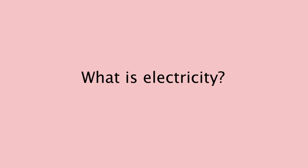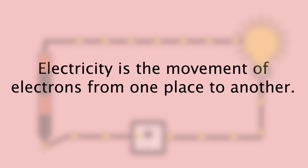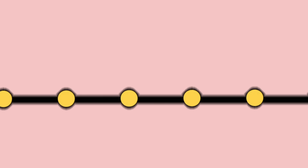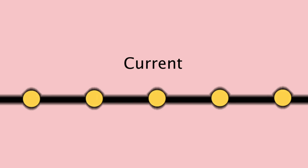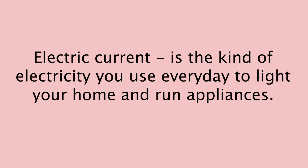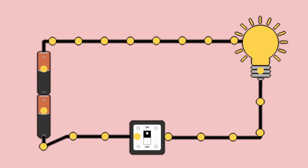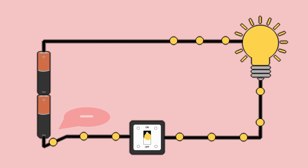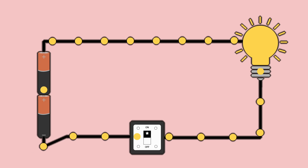So what is electricity? Electricity is the movement of electrons from one place to another. How does electricity flow? The movement of electrons along a path is called a current. Electric current is the kind of electricity you use everyday to light your home and run your appliances. An electric current can be compared to a flowing stream of water. It flows from negative to positive following a path.